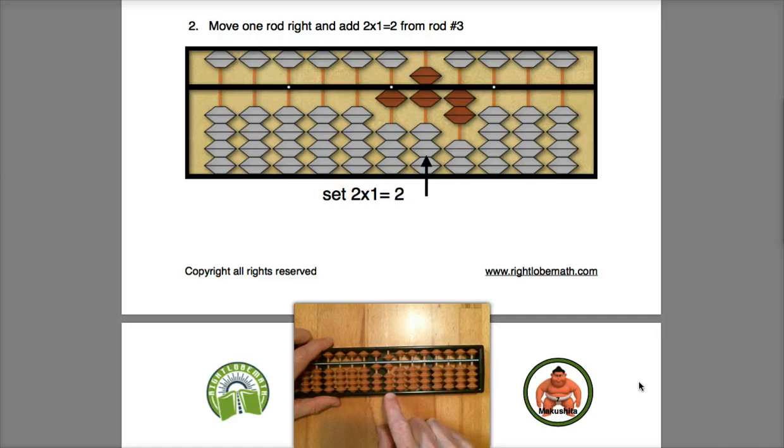Now we're going to move one rod right and multiply the 2 times the second multiplicand digit 1. Two times 1 is 2, and I enter that as 0-2.